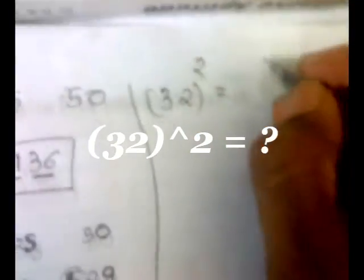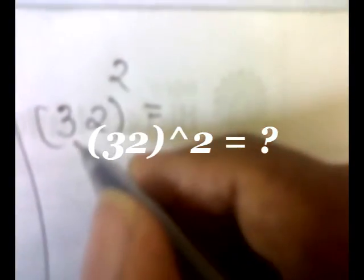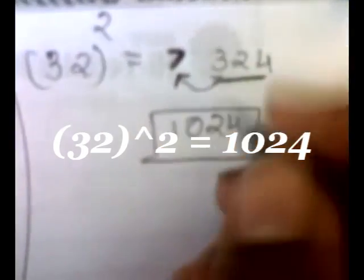Let's take another fast example: 32 squared. The difference between 32 and 25 is 7, and the difference between 32 and 50 is 18. The square of 18 is 324. Here again we get three digits, so we put 24 as it is and add 3 to the 7 — 7 plus 3 is 10. So we have the answer: 1024.